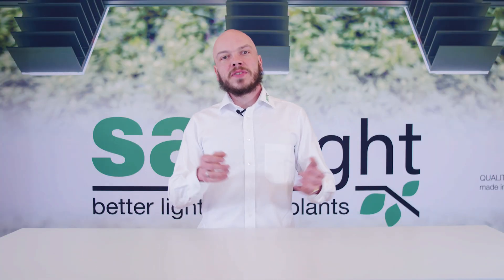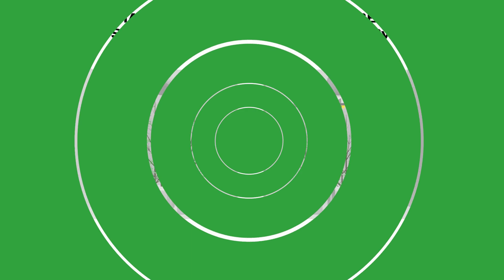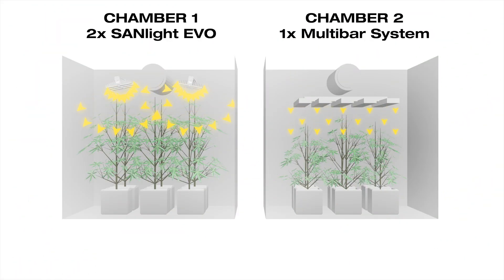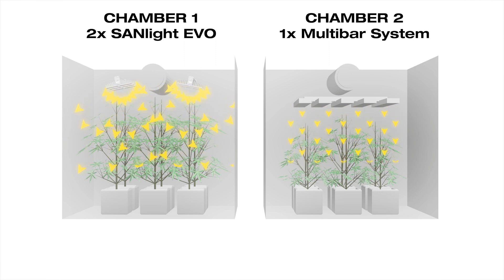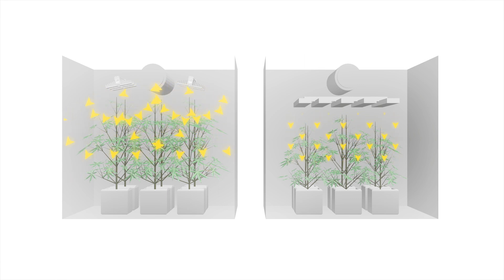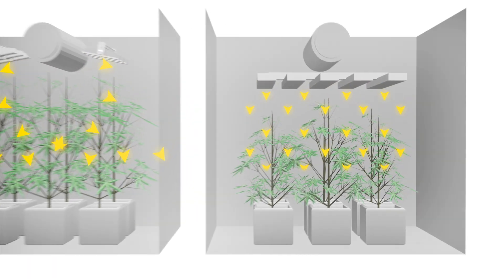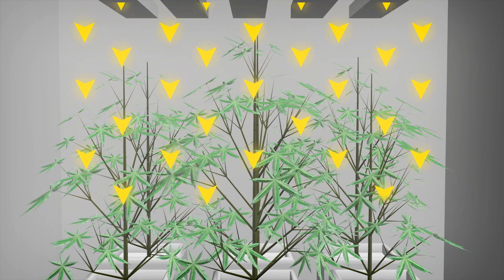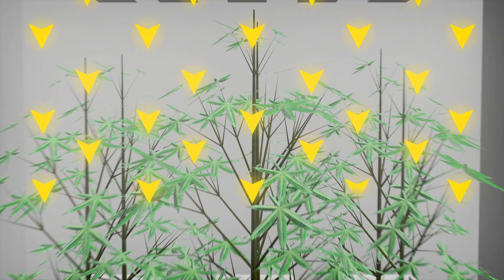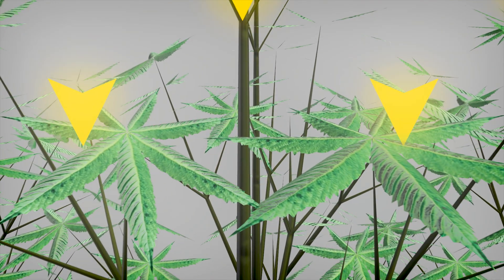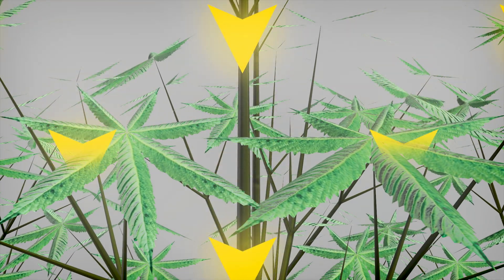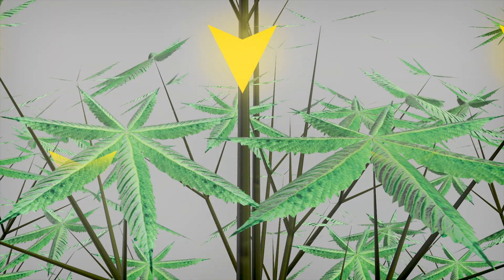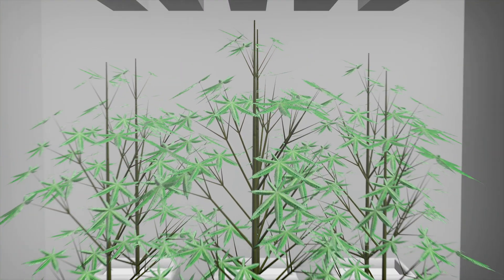Let's go over to diffuse light distribution. As can be seen in the animation, the diffuse light distribution and the impingement of light rays from a wide variety of angles maximizes the illuminated leaf surface. Looking at the second chamber, we see that the light comes comparatively statically from above the plants, which leads to the fact that already the uppermost leaf layers absorb the light and further penetration into deeper plant areas is prevented.